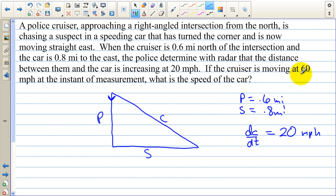If the cruiser is moving at 60 miles per hour, so DP DT, the cruiser is moving at 60 miles per hour. At the instant of measurement, what is the speed of the car?